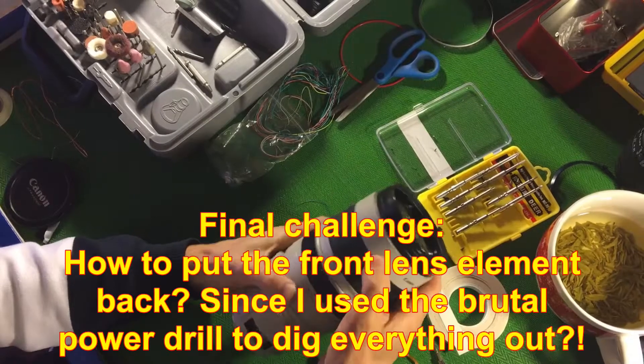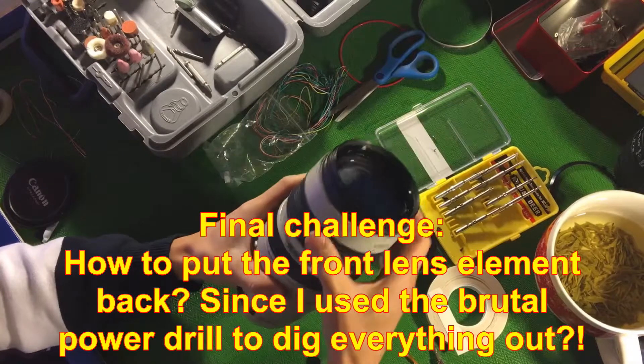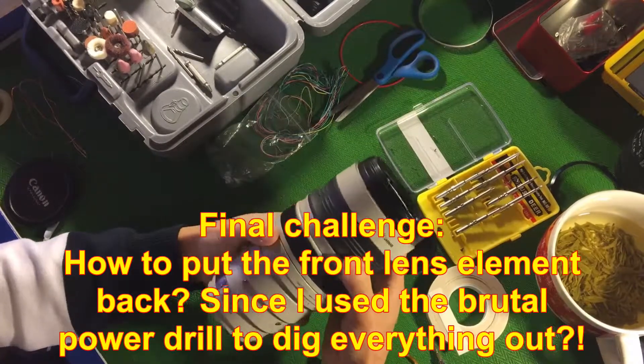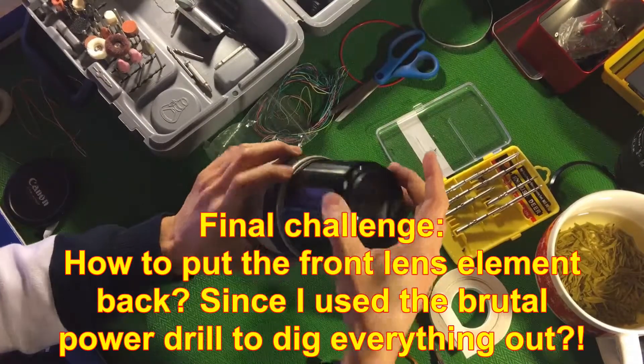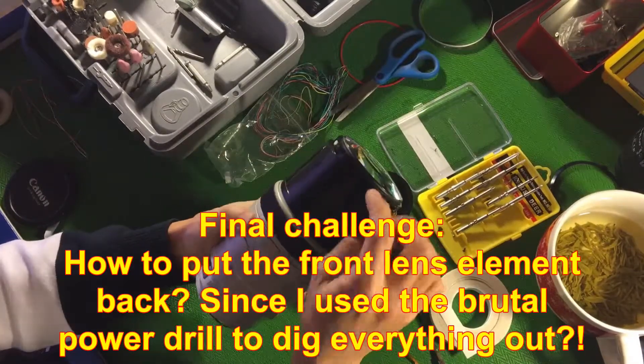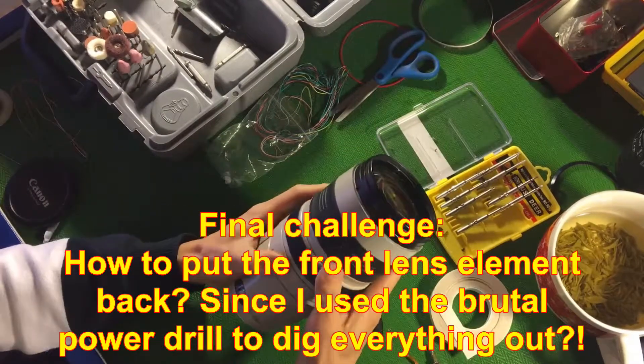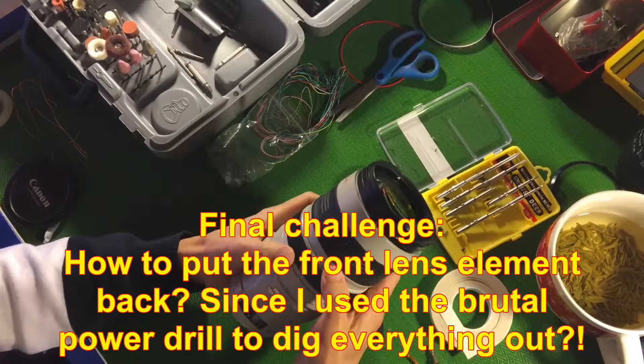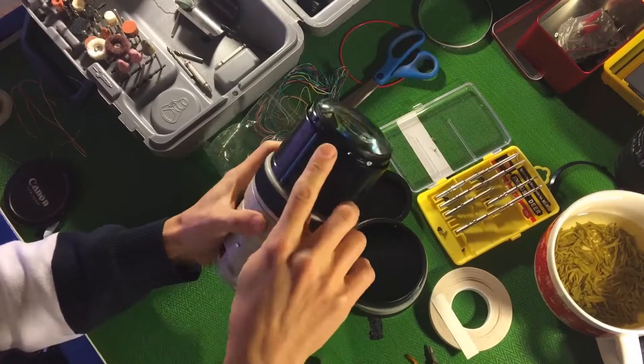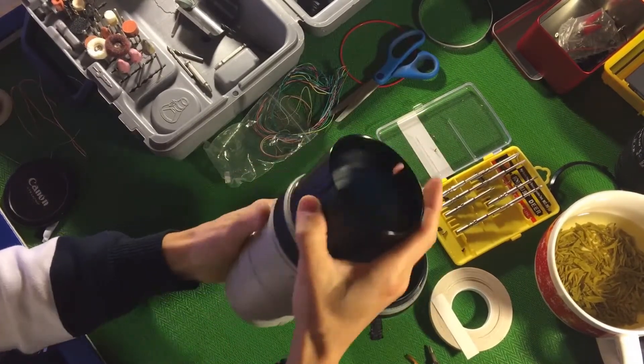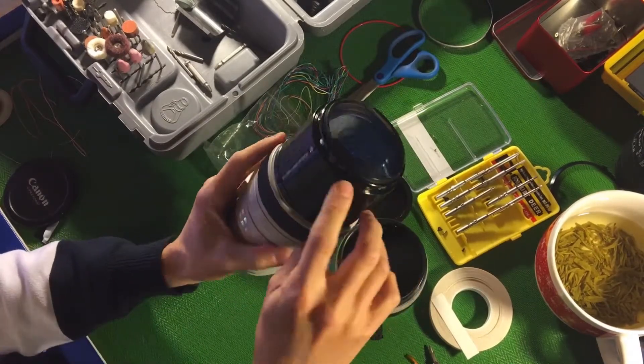The final part is, since I damaged all those screws here, I have to find a way to put this ring back. This is made of metal, there's no way I can drill a hole to nail this to it. The workaround I found is, since this one is plastic, and the front lens has six screws here...